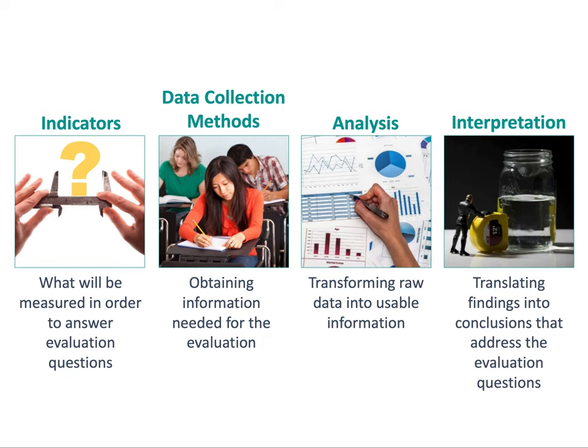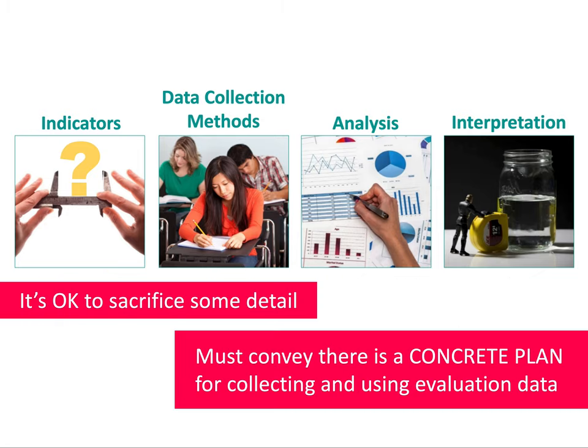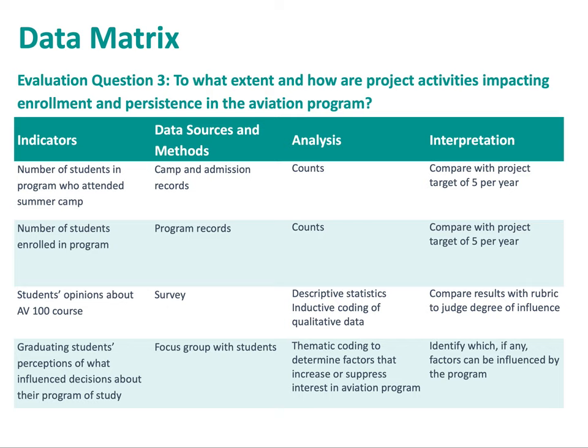Now you may be thinking that this is a lot of information to include in just one part of a one to two page evaluation plan — and you're right. You probably don't have a lot of room to go into depth, but you do want to demonstrate that there is a concrete plan for collecting and using the evaluation data. So with that in mind, an efficient way to present the data elements of an evaluation plan is to put them in a table. I like to say that tables and matrices are an evaluator's best friend. Don't worry about reading the contents of this table; instead, just focus on the format and the organizational structure.